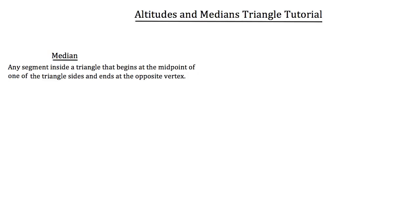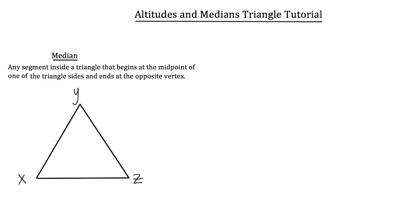Let's draw a triangle and take a look at that. We'll name it triangle XYZ. I'll begin by drawing a median from vertex Y. You can see that I've drawn a segment down from Y to the side opposite vertex Y, and that segment cuts side XZ into two congruent segments. Unlike the altitude, we don't necessarily need to intersect the opposite side at a right angle — all that's important is that we're bisecting the opposite side XZ.